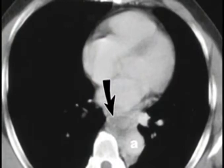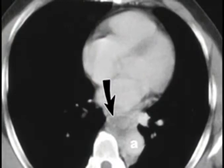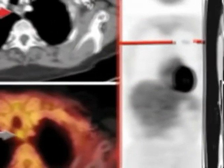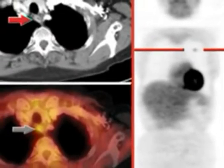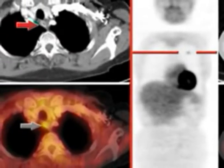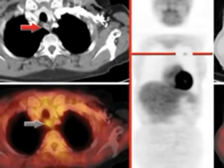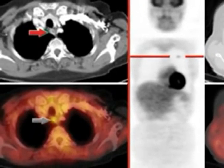A CAT scan allows your physician to see detailed pictures of areas inside the body. When coupled with a PET scan, a study that uses radioactive sugar, distant spread of the cancer known as metastasis can also be found if present. Other studies including bone scans and bronchoscopy can also be useful to characterize the extent of the disease.